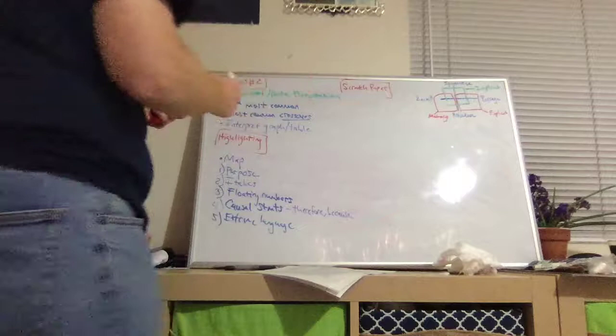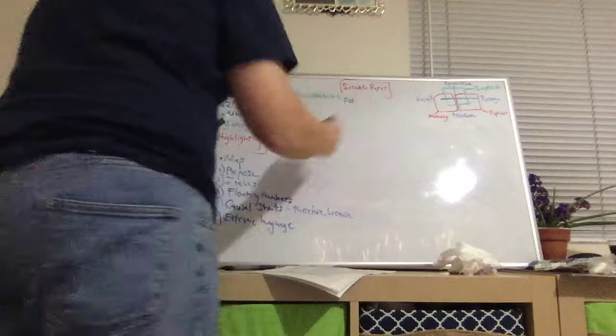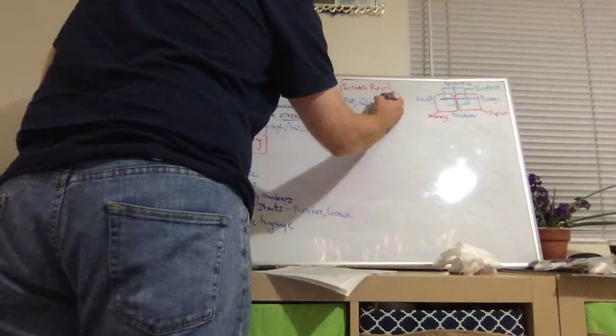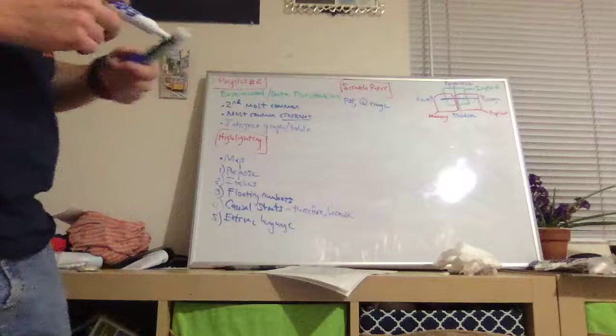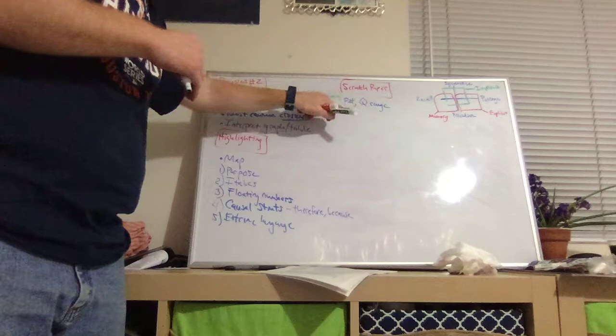For each question, you want to write a passage number, and that way you remember what passage that question went with. You want to write the question range, meaning maybe passage one was questions one through five, or passage two was questions six through nine, and so forth. And that way you know all of these questions went with one particular passage from your test.